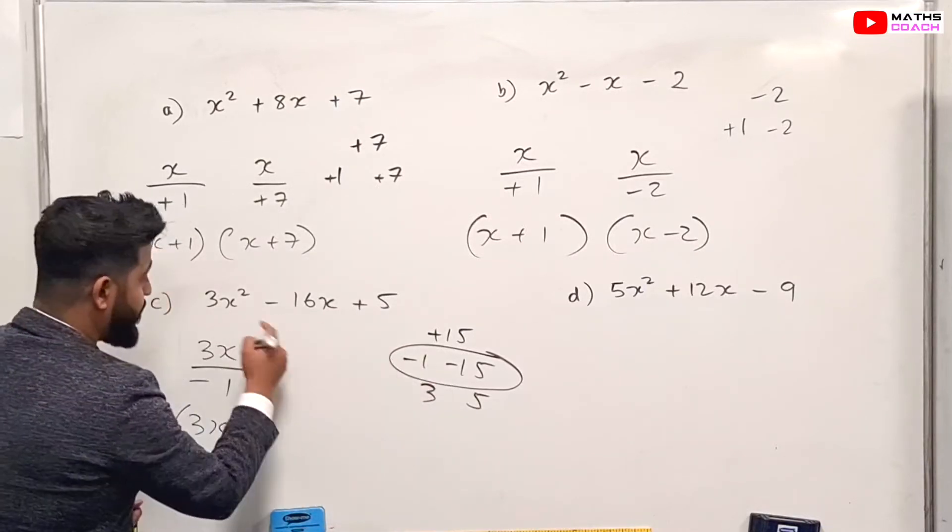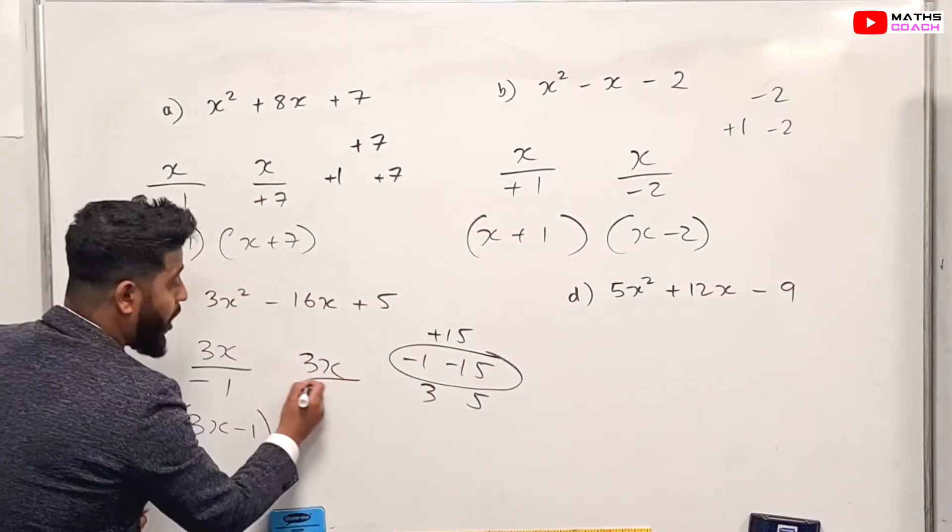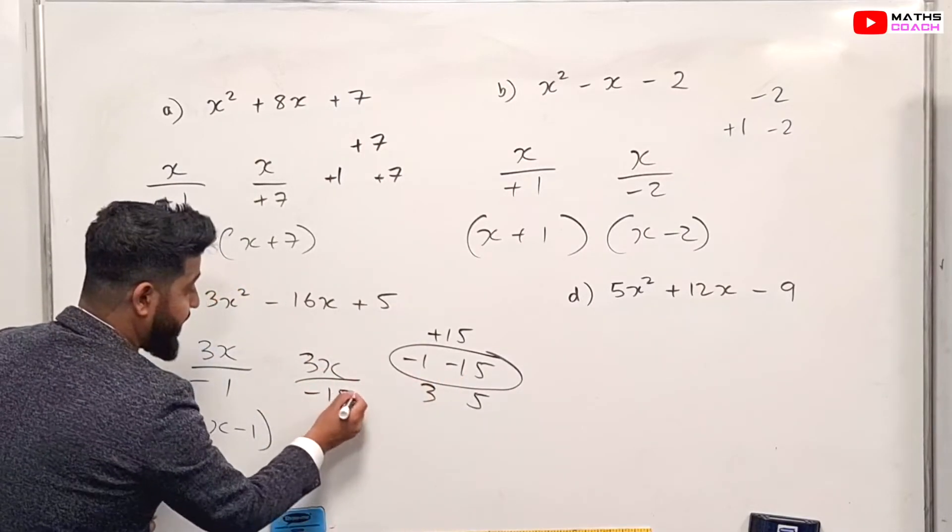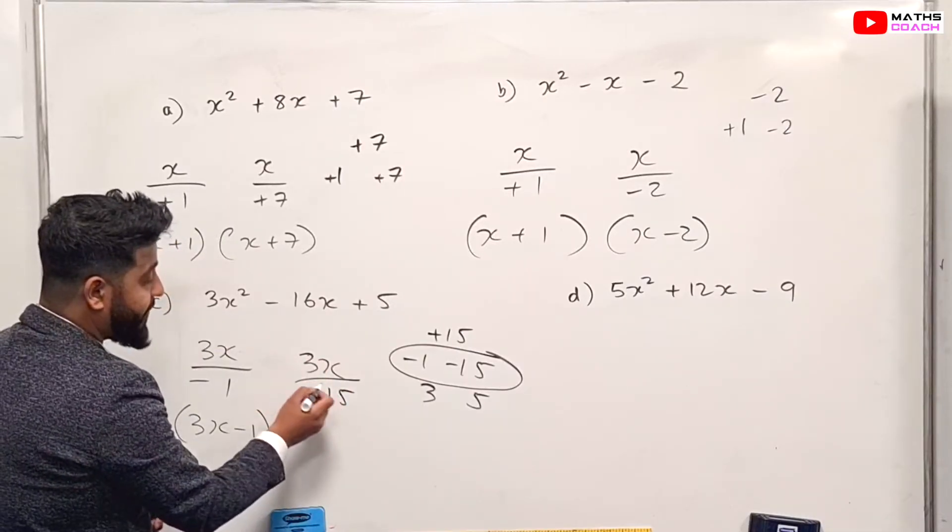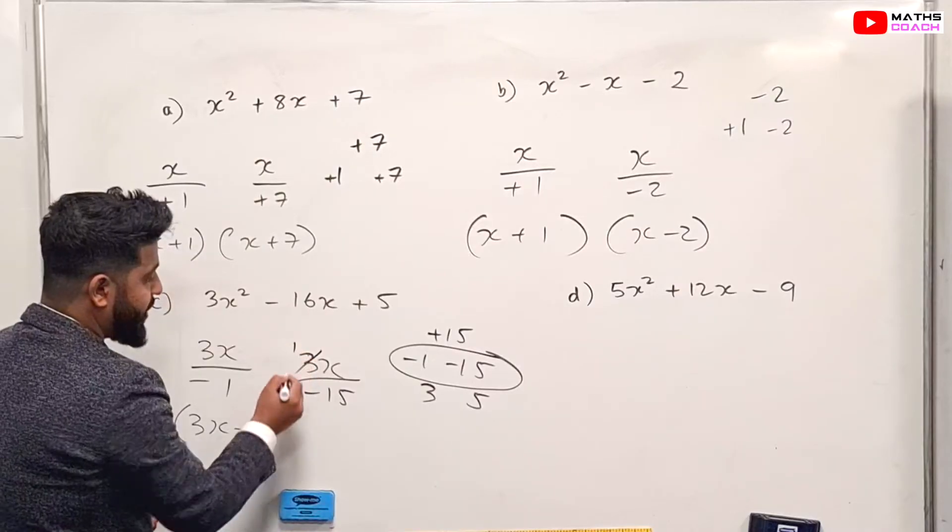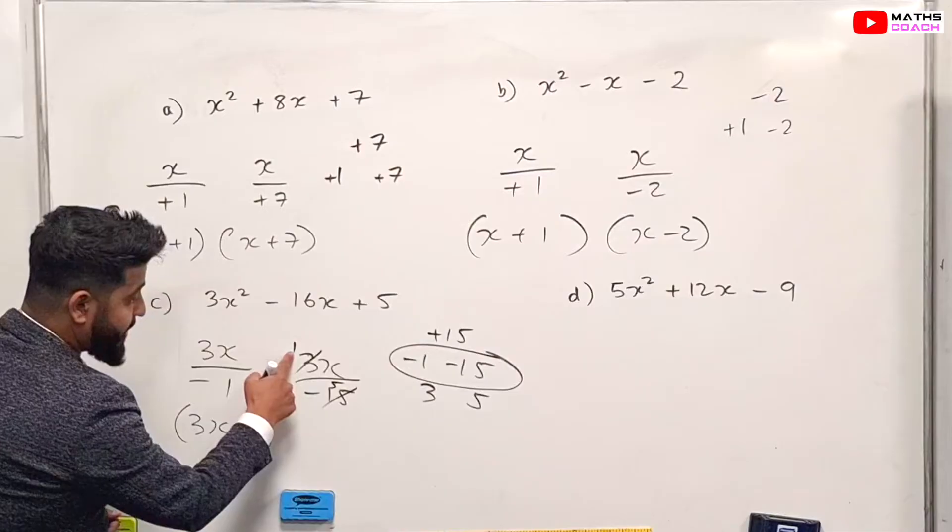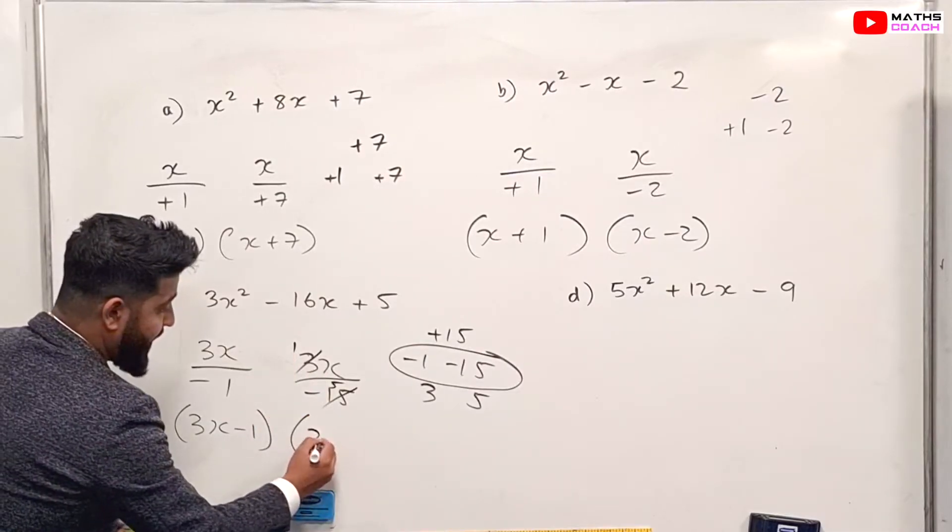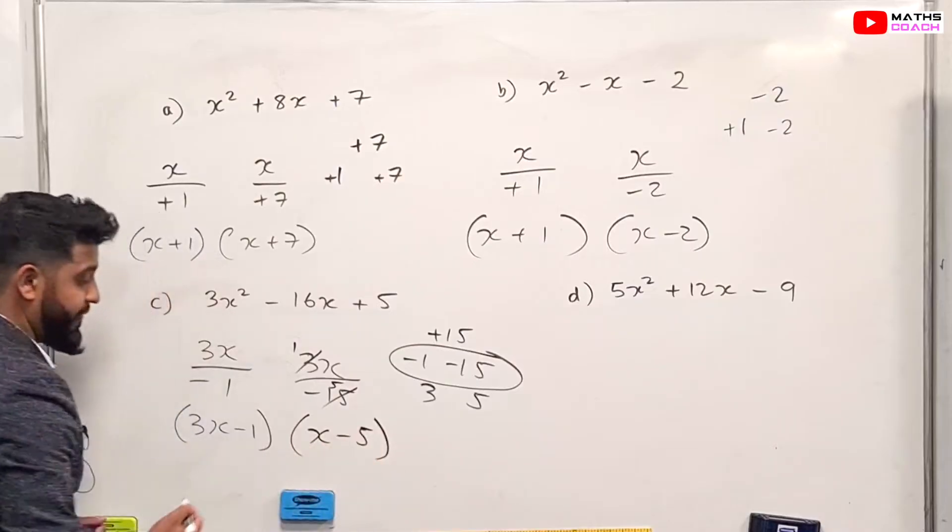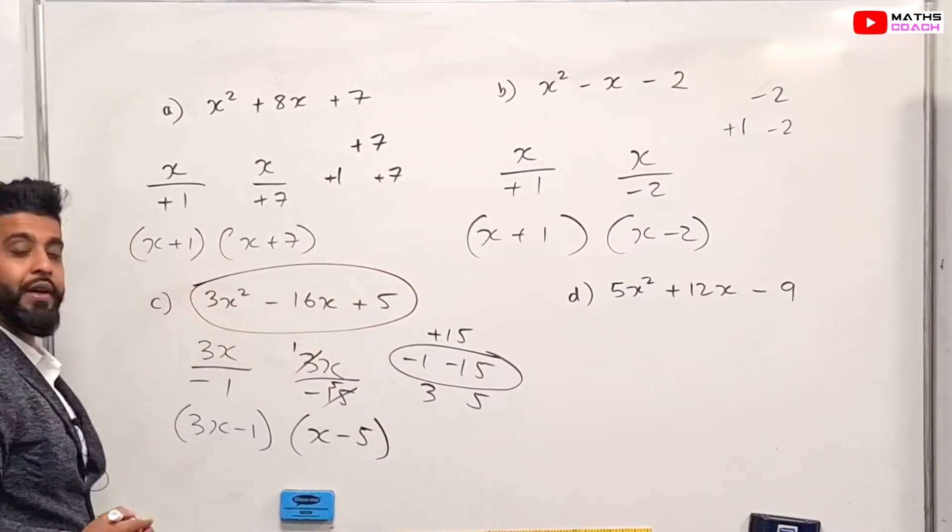The second one, we do the same thing. So once again, 3x, again this value here without the square, over minus 15. And this time we can simplify. So we can divide 3 and 15 by 3. So 3 divided by 3 is just one, and 15 divided by 3 is five. So this ends up with one x over minus five, which is simply x minus five. And this has factorized this expression right there.